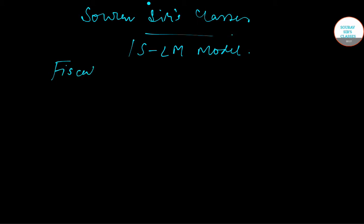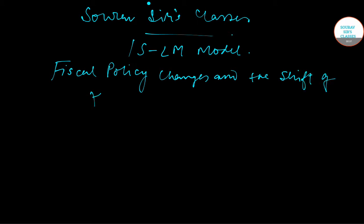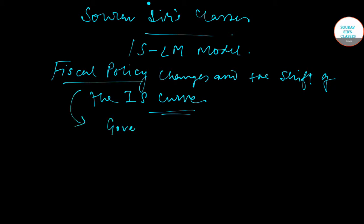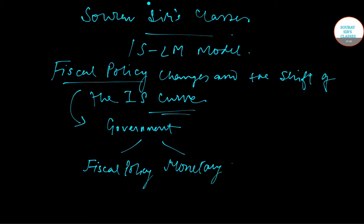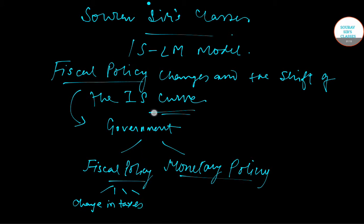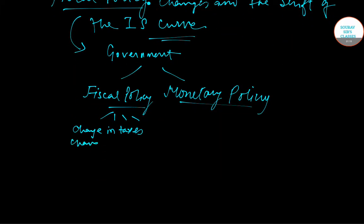Today we are going to talk about fiscal policy changes and the shift of the IS curve. Let me first tell you what fiscal policy is. Government undertakes two types of policies: one is fiscal policy and the second is monetary policy. In case of fiscal policy, the policy instruments the government has are change in taxes and change in government expenditures.